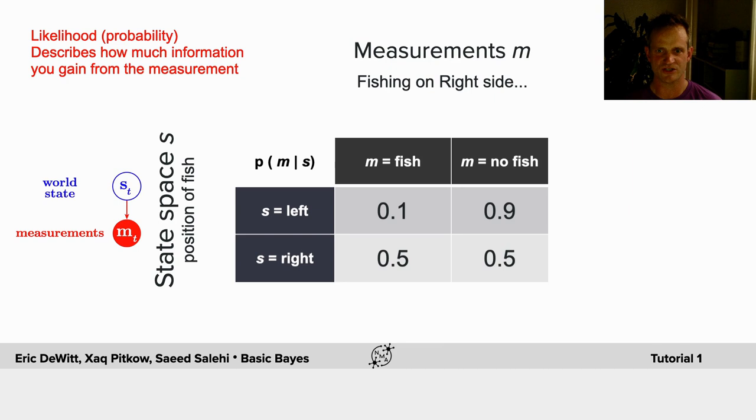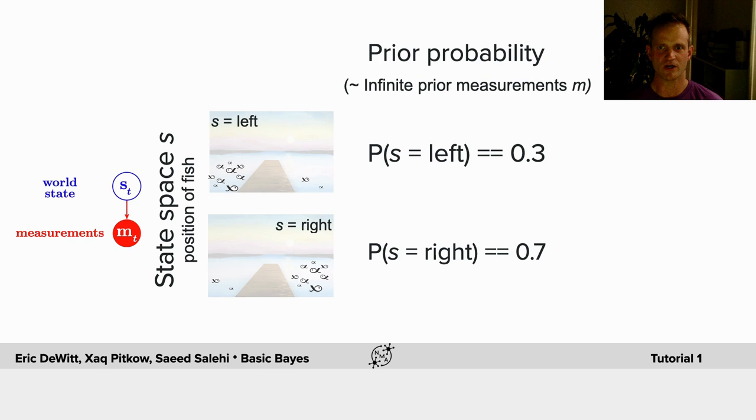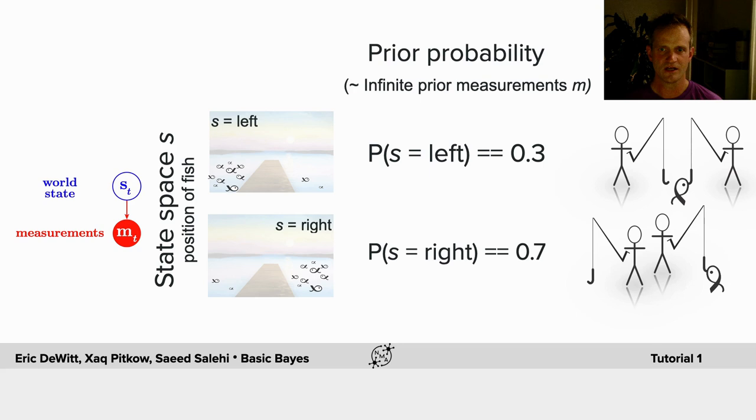If we know a prior probability, and this is basically infinite prior measurements, the prior probability of the state being left is 30%, and therefore the state being right is 70%.